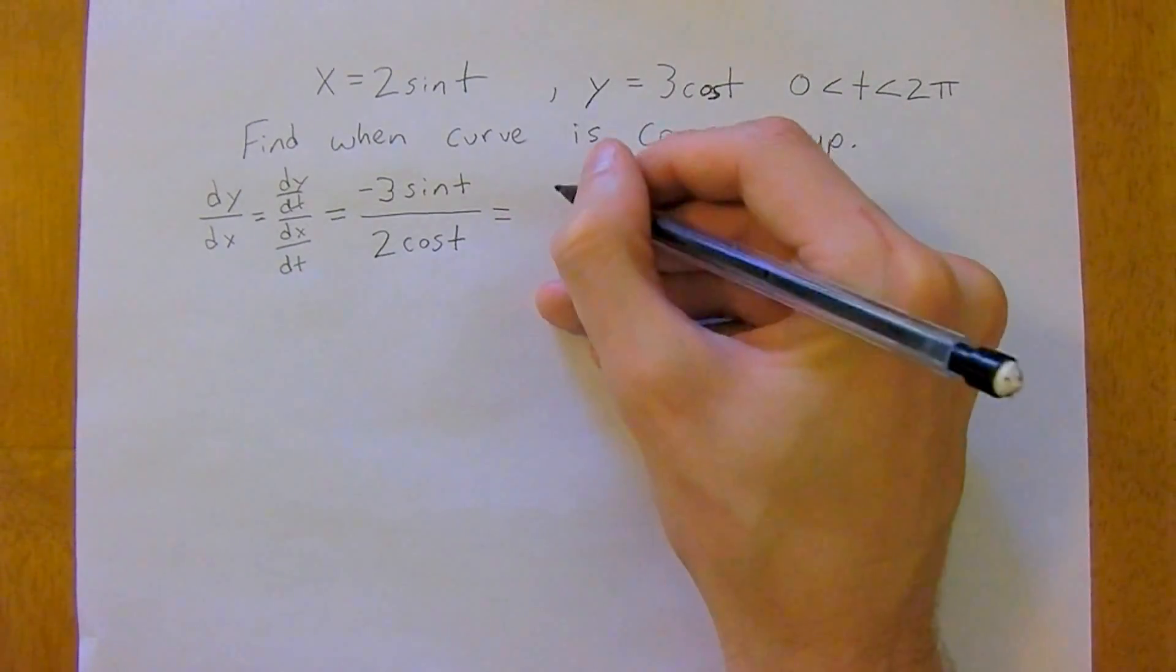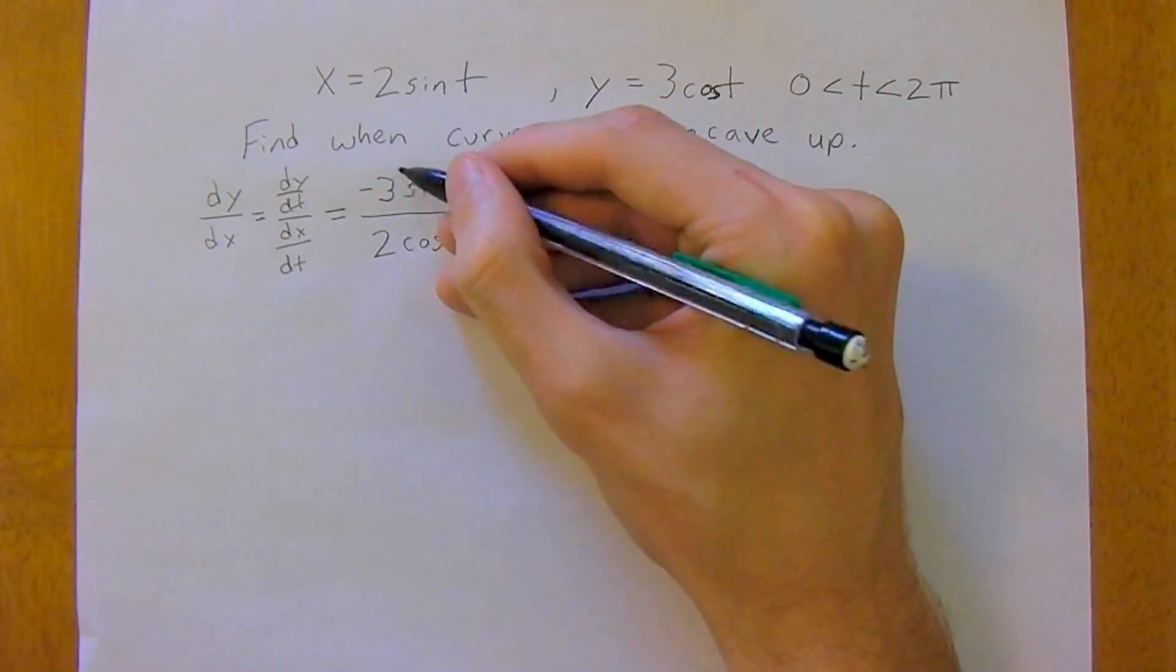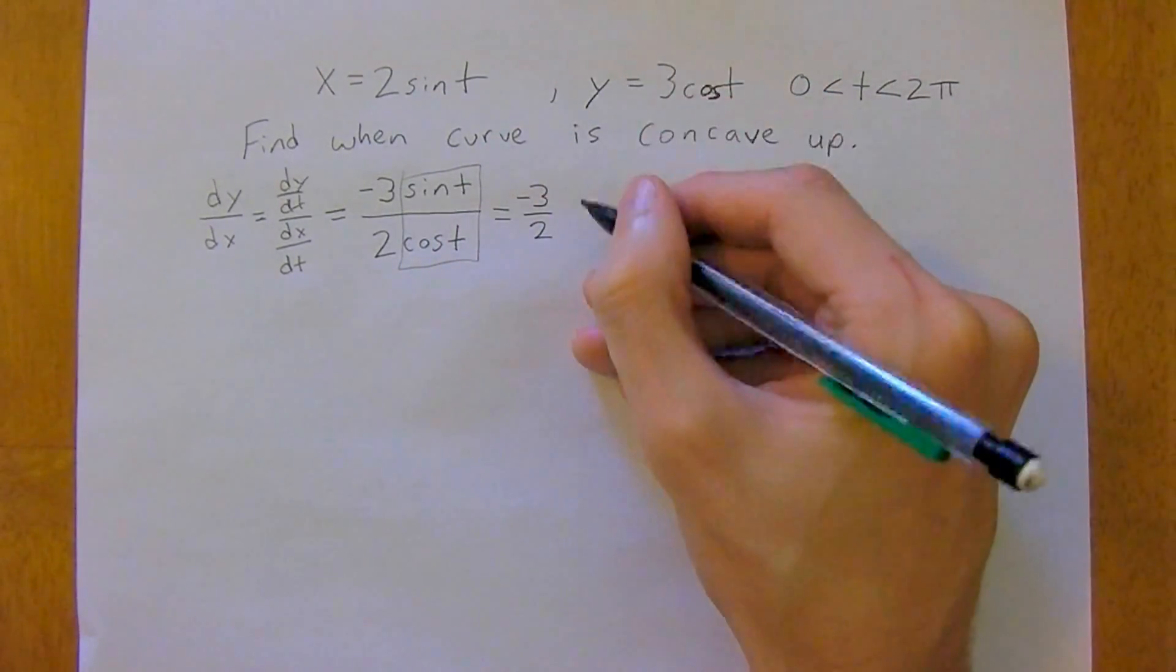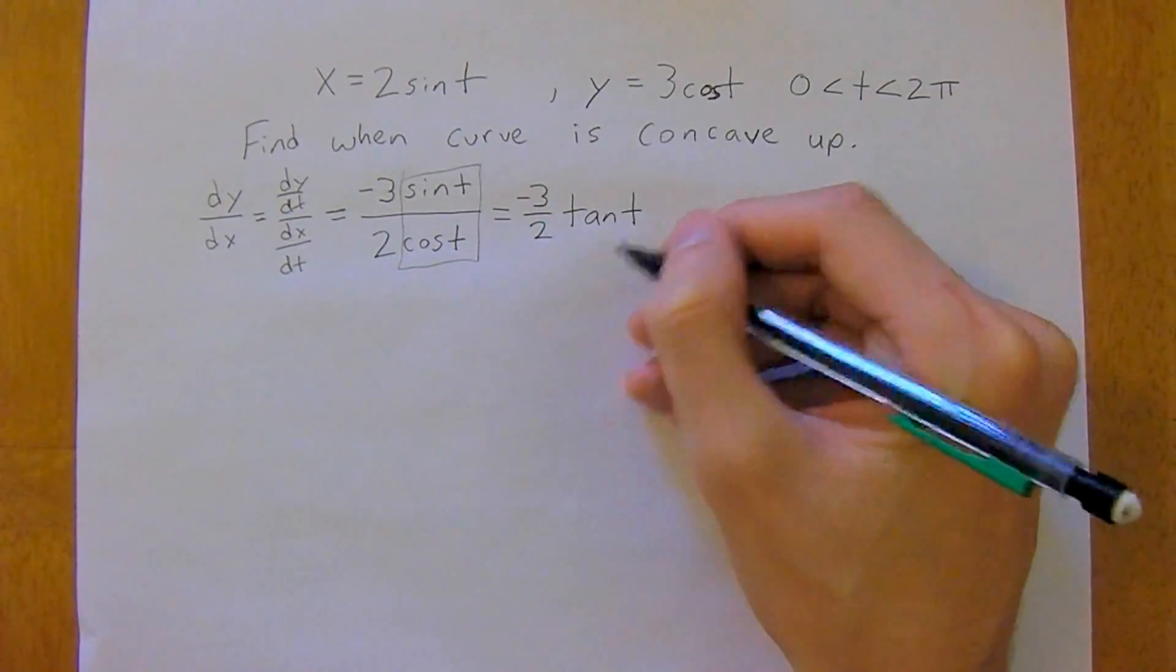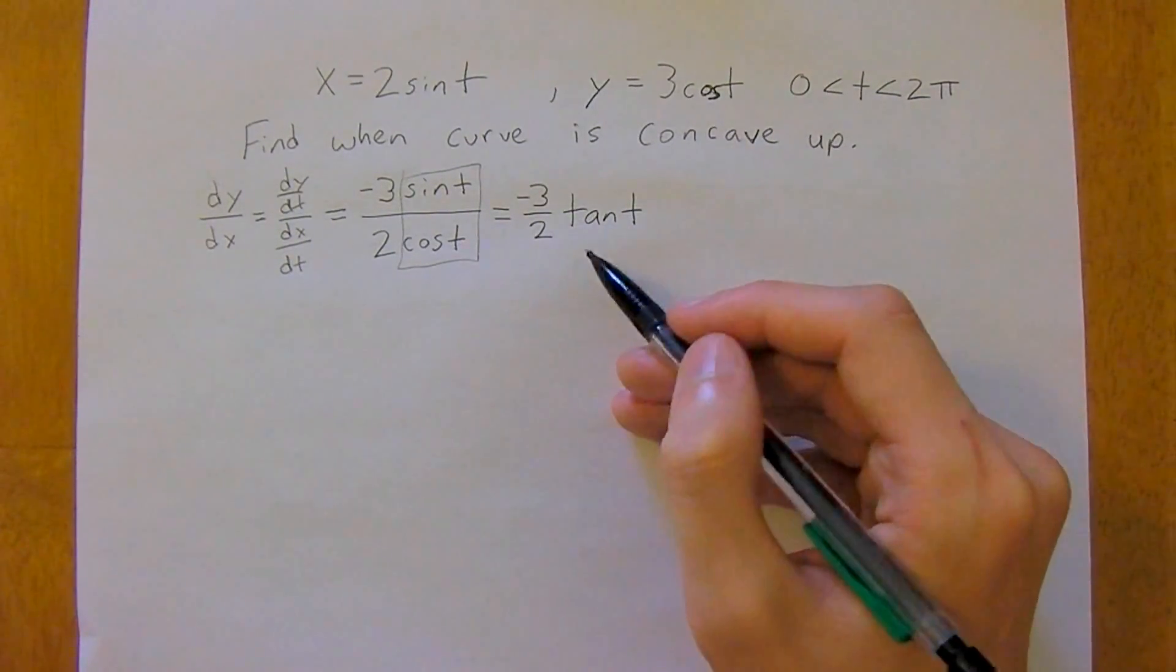And then now we can simplify this, and this is a big trig identity here, so sine t over cosine t is the same as saying tan t. So we've got negative 3 over 2 tan t.